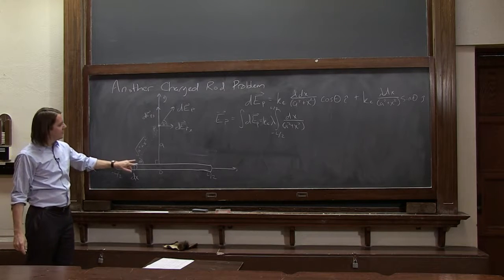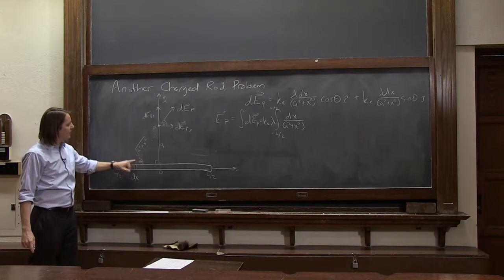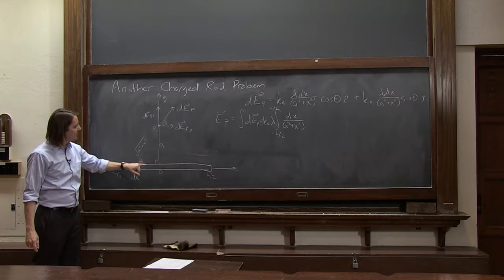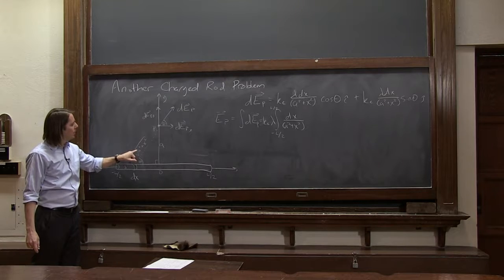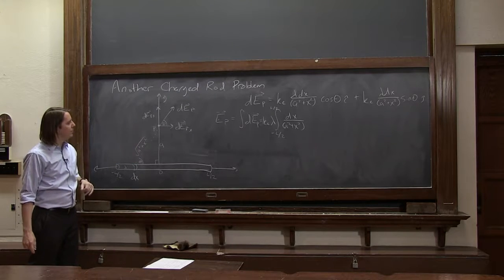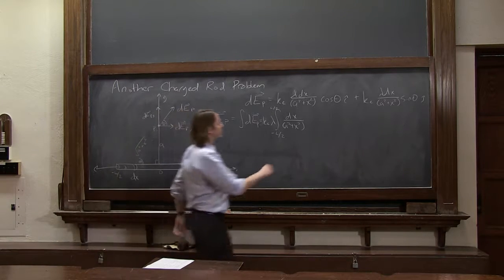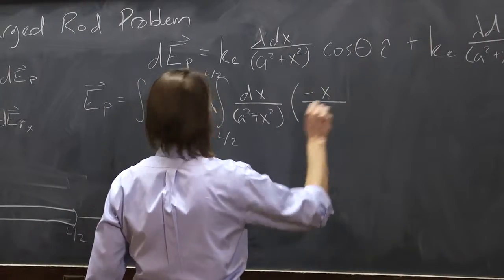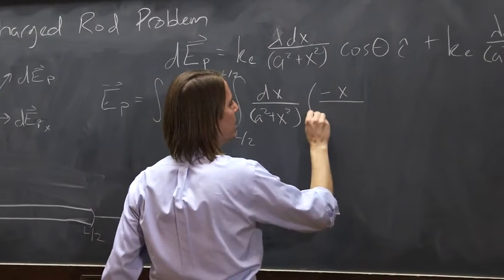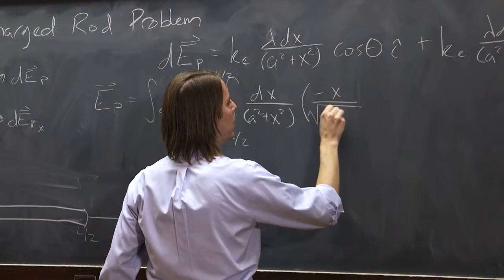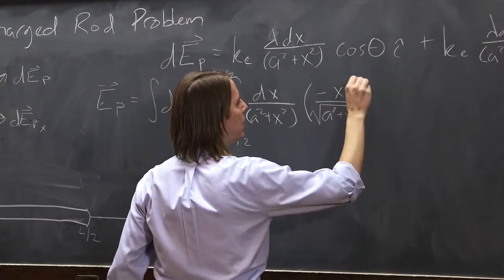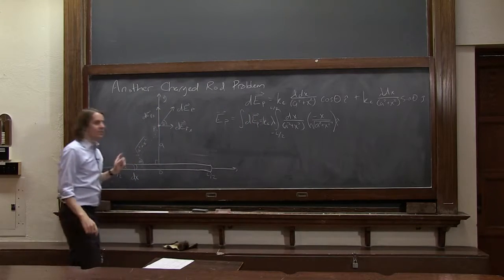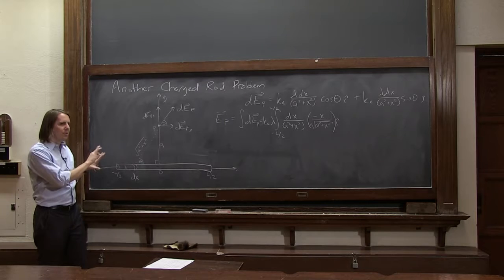And we look at this right triangle again, and this is how we can figure out what cosine theta is. Cosine is adjacent over hypotenuse, so it's this x value over this hypotenuse value. So cosine theta is actually minus x over the square root of a squared plus x squared i hat. And it is minus,